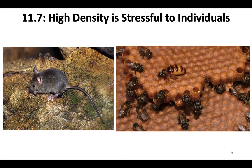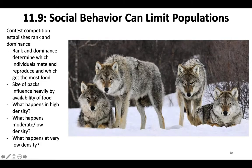Social behavior, like we just talked about in bees, can also limit populations. Contest competition within social organisms can establish rank and dominance. We'll talk about a wolf pack example specifically. Rank and dominance within a wolf pack determines which individuals mate and reproduce and which ones get the most food, and the size of the pack influences food availability to each individual within the pack.